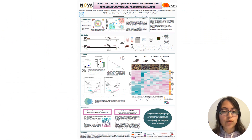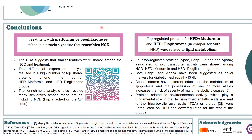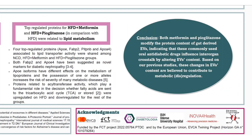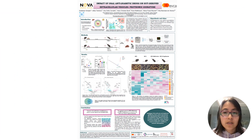And finally, our conclusions. We unveiled that treatment with metformin or pioglitazone resulted in a protein signature that resembles normal chow diet — that is, the healthy signature — and the top-regulated proteins for high-fat diet versus pioglitazone and high-fat diet versus metformin are related to lipid metabolism. If we access the link encoded on the QR code, we can access the common molecular functions among these three groups. The take-home message is that both these drugs can modify the protein content of gut-derived EVs and, ultimately, play a role in interorgan crosstalk for metabolic homeostasis. Thank you very much for your attention.